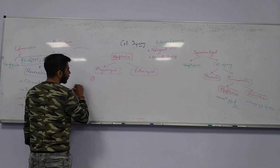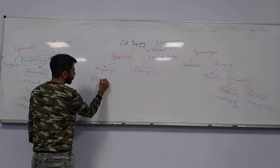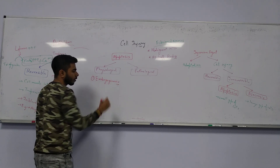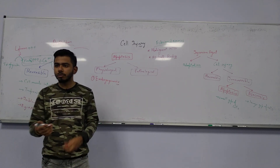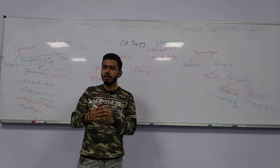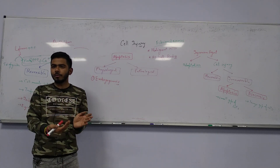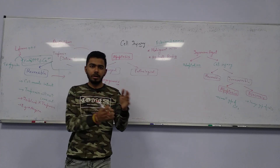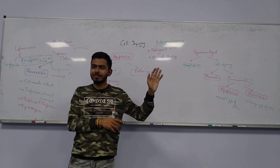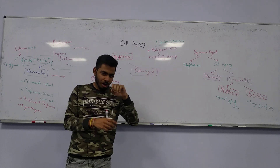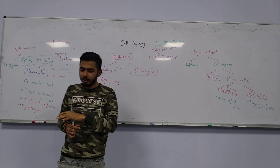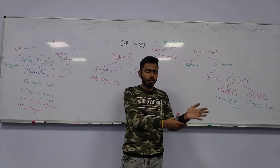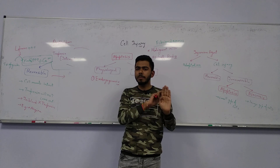The first example is embryogenesis. We know about evolution — how we appeared in this world. If you talk about the development of the hand, first of all the fingers will not be appearing. It will look like a flat paddle at first.